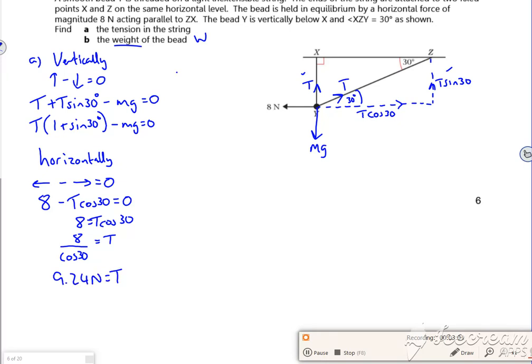So then now I can sub that back in, because if I take the mg over, the weight T times 1 plus sine 30 is equal to mg, which is my weight. So 9.24 times 1 plus sine 30, if you can read that, is my weight, which roughly works out as 13.9 Newtons for my weight there. So I've actually worked out part B as well, just by setting up equations.